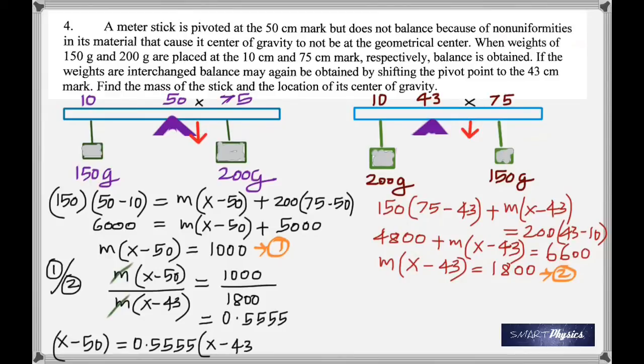So now what I do is cross-multiply, x minus 50 is equal to that long string of 5s multiplied by x minus 43. Distribute that. So x minus 50 is equal to that times x minus when I multiply the 0.5555 with 43, you get 23.88.